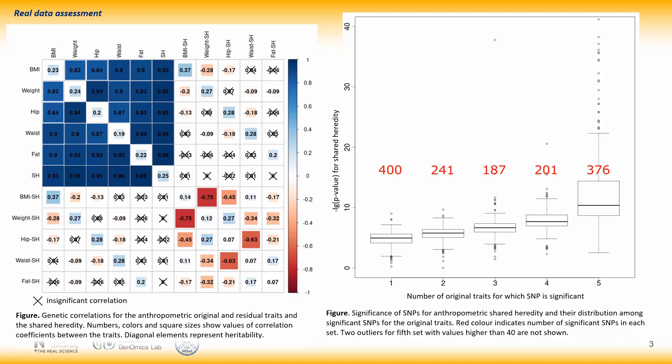The x-axis shows the number of original traits for which the considered SNP is significant. We can see that the higher the significance of a SNP for the shared heredity trait, the stronger its association with all the original traits. A similar picture is seen for the other real data sets. We conclude that the method can be used to find the shared heredity component of different correlated traits. Thank you for your attention.